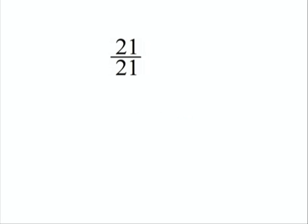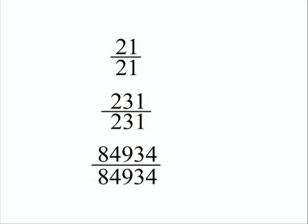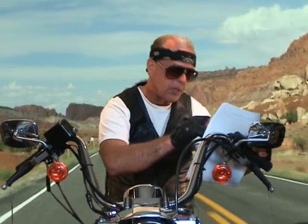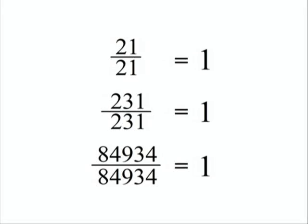What are numbers like 21 over 21, or 231 over 231, or 84,934 over 84,934 equal to? Those are all equal to 1 also.